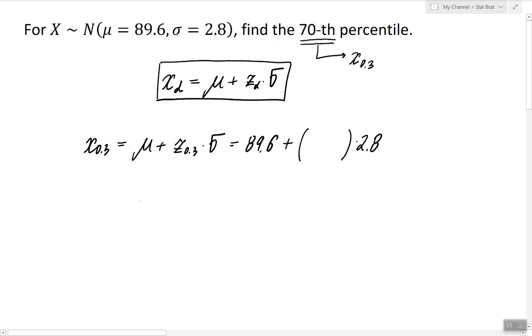So how do we find z.3? To find z.3 we're going to look inside the table for 1 minus alpha, in this case for 0.7 or the nearest values to 0.7.